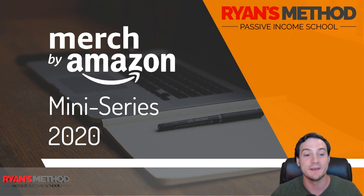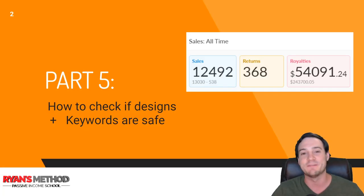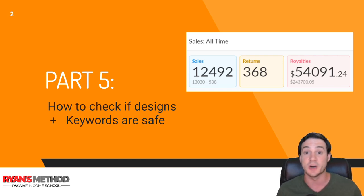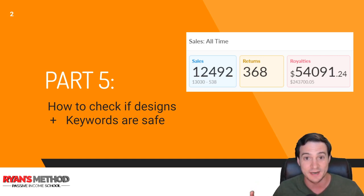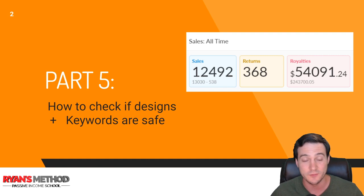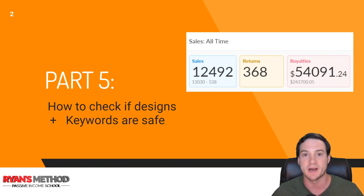This is part five of my Amazon Merch miniseries. I'm going to show you how to determine if it's safe to use specific keywords and designs in your Amazon Merch submissions. When you submit your design it goes to under review — if it stays there for more than a few minutes that's not a good indicator, unless you're in tier 10, in which case they all stay under review for a while just to make sure you know the ropes.